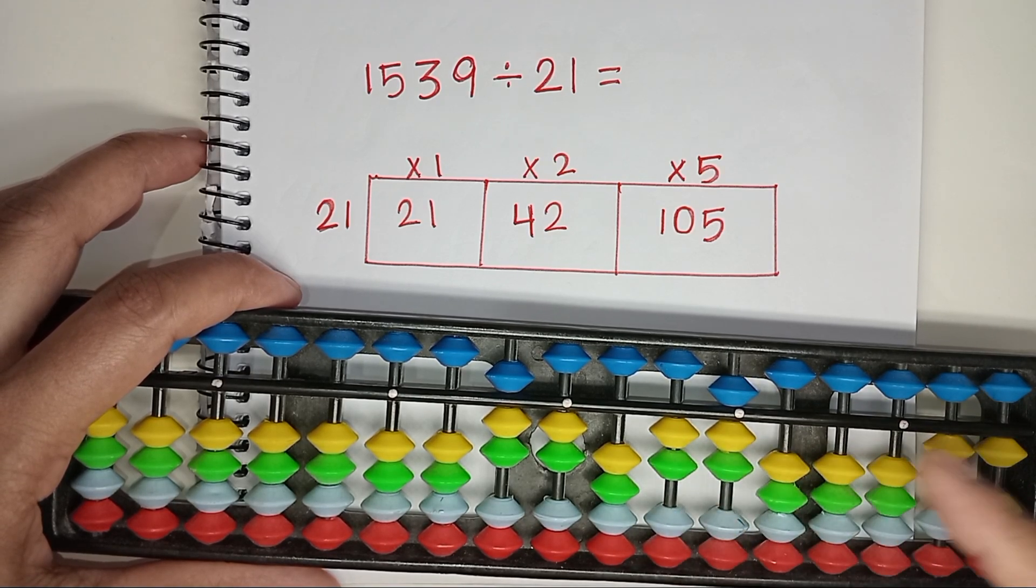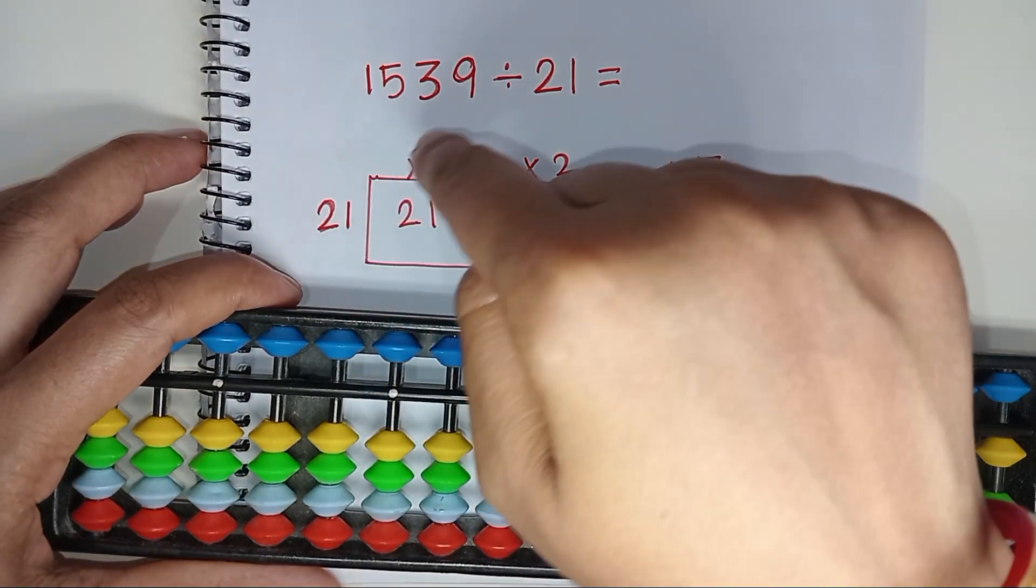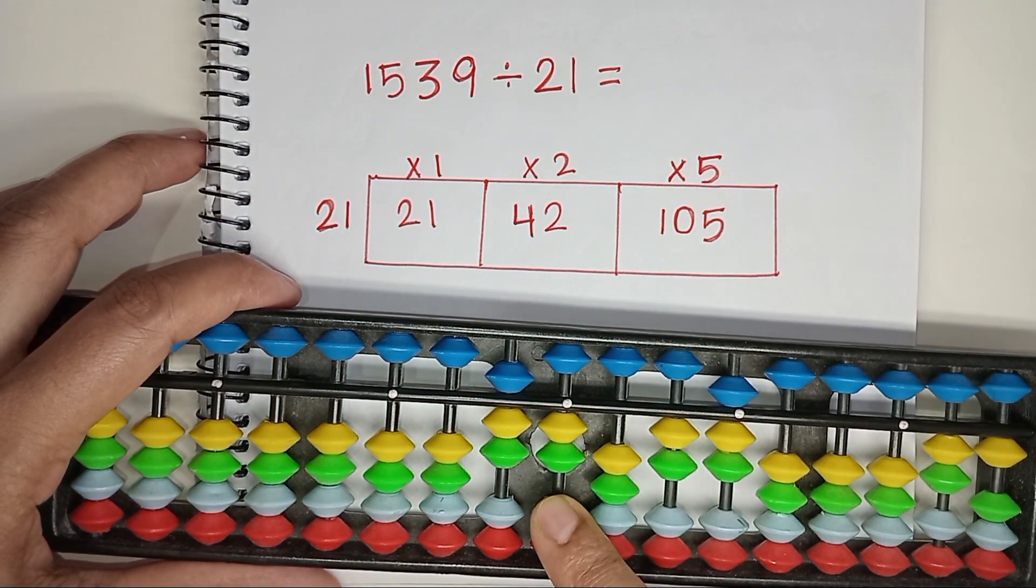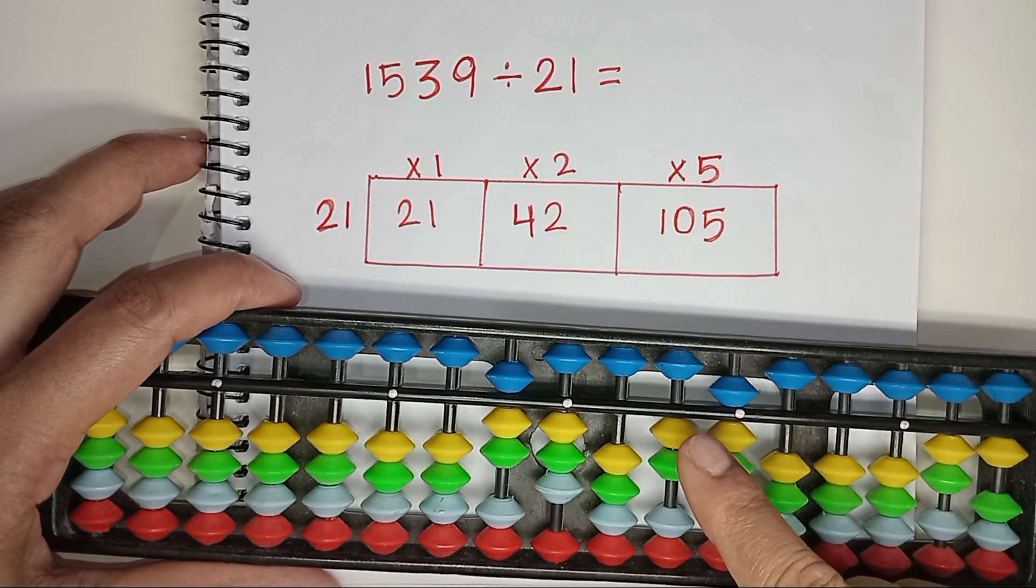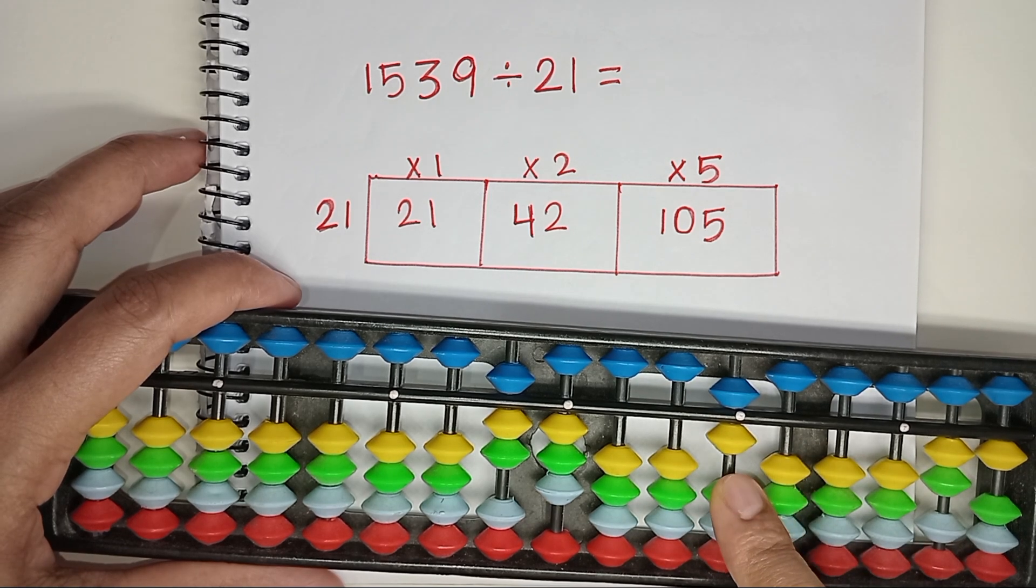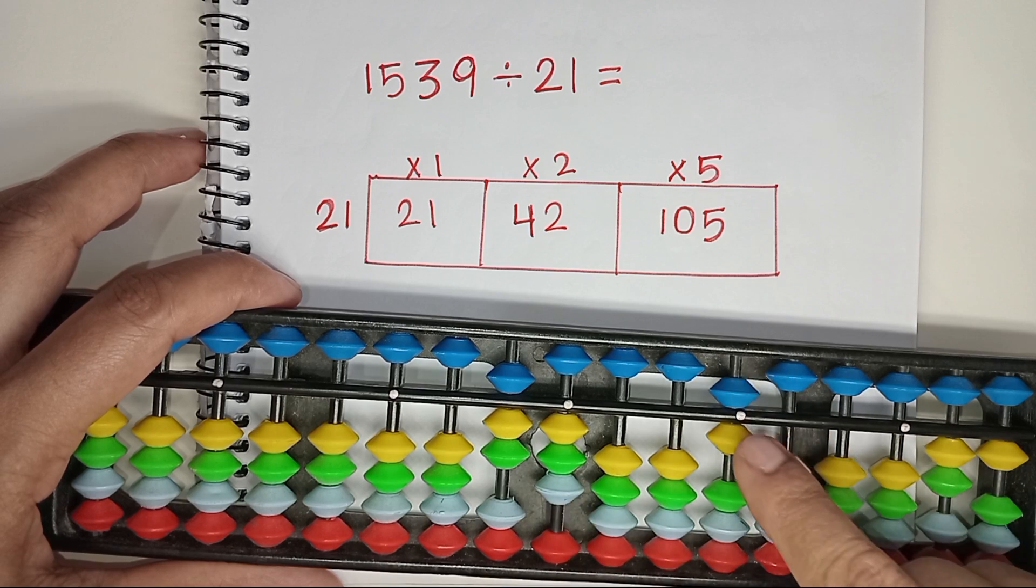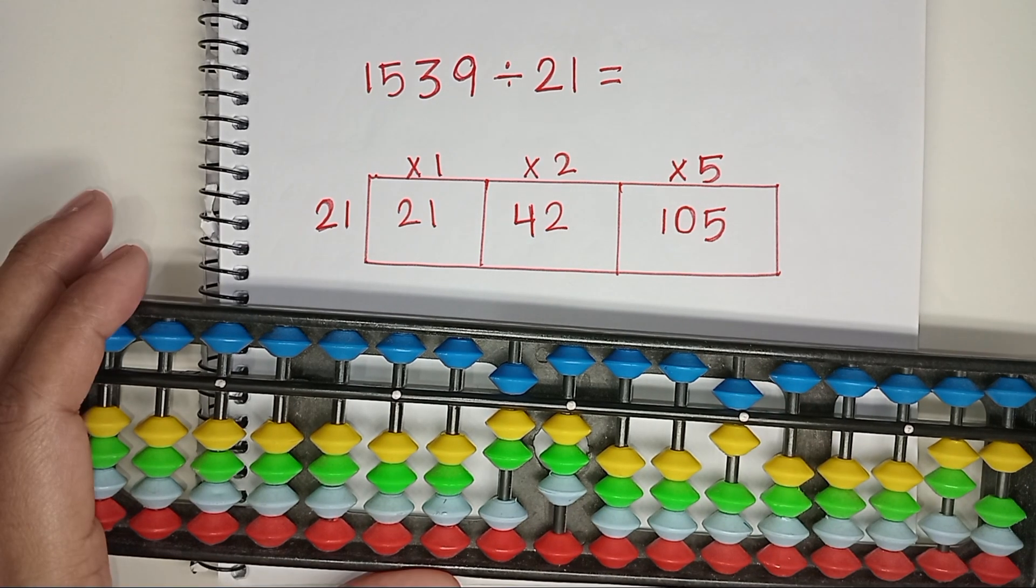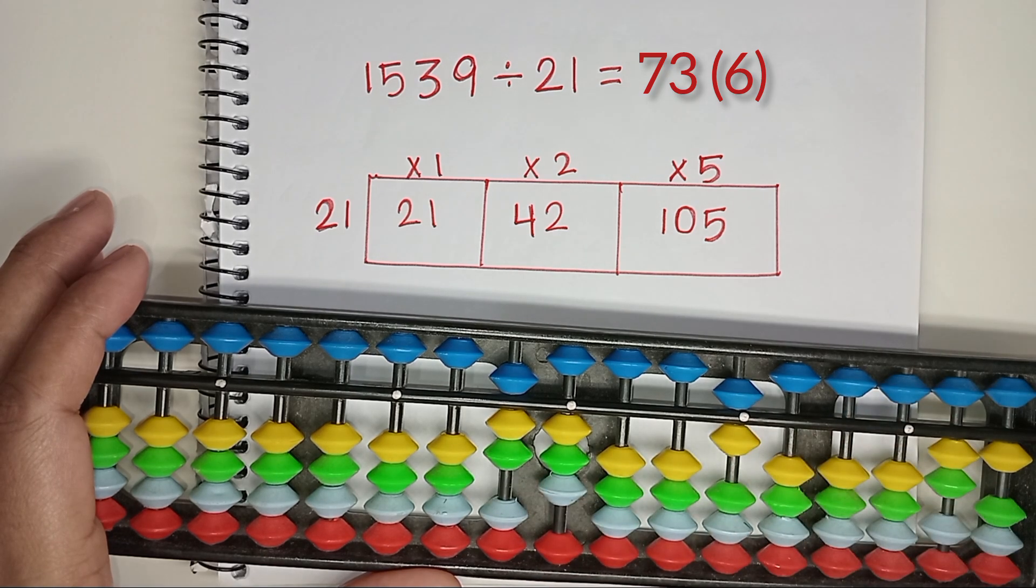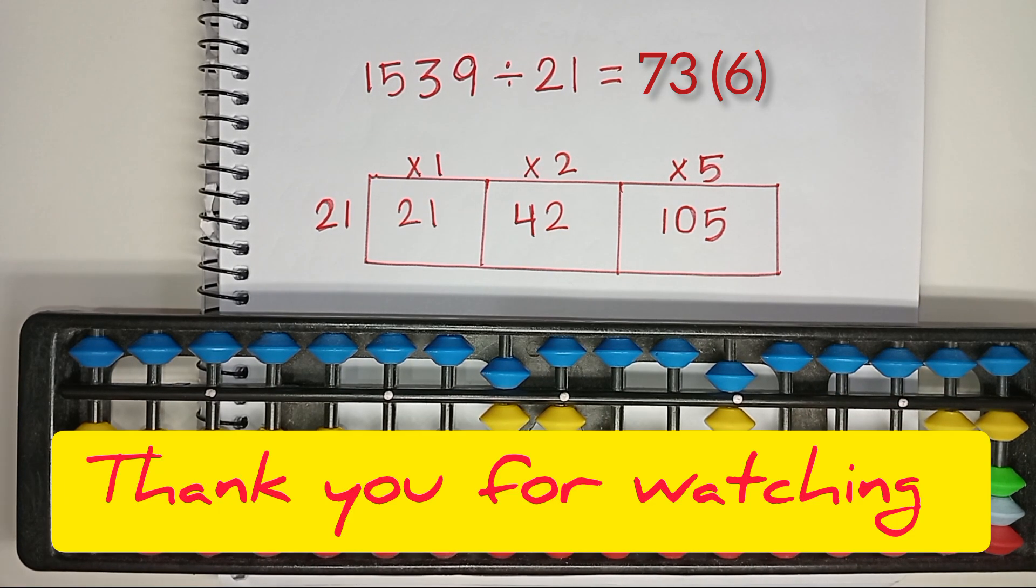27 is not divisible by 21, but we can get the nearest answer. 21 times 1 is 21. Jump 1 rod and place the answer here. 21 times 1 is 21. Less 21 from here. 6 is left. Our quotient is 7 and 3, which is 73. And remainder is 6. In abacus, we will write the answer 73 and 6 within bracket. I hope you have enjoyed today's lesson and learned something. See you soon in the next lesson.